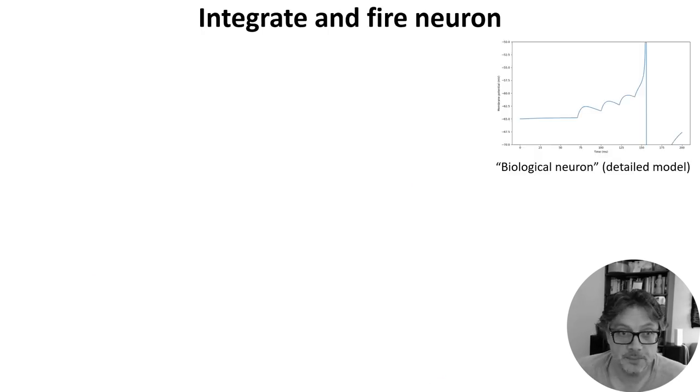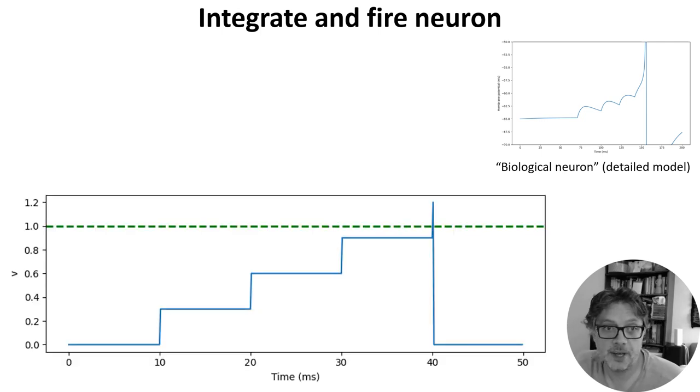The simplest possible model you could have of that is called the integrate-and-fire neuron, and here's a plot of how it behaves.